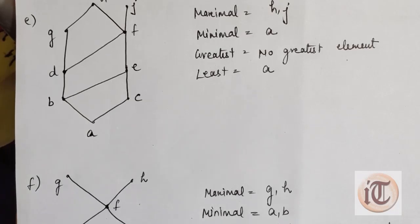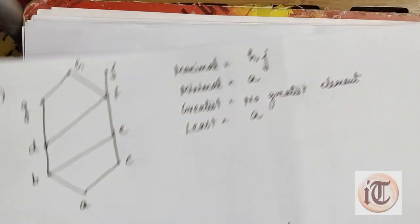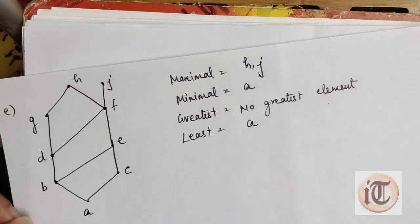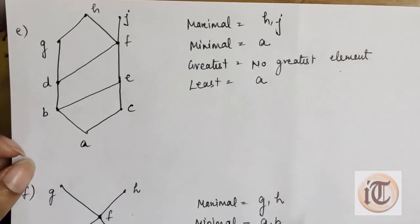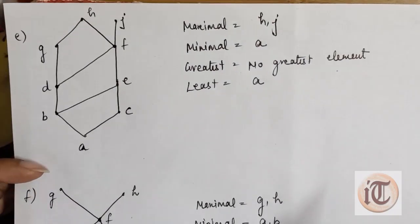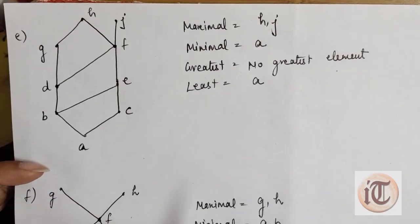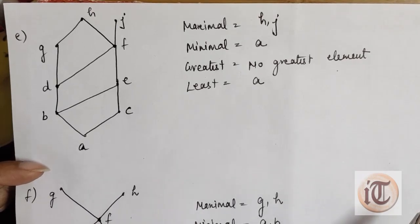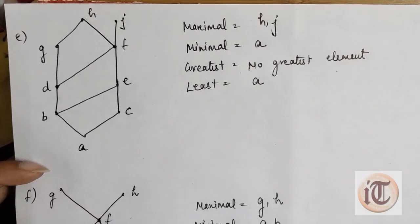In my next video I am going to discuss the next four components of poset: upper bound, lower bound, greatest lower bound, and least upper bound. Keep watching. Thank you so much.